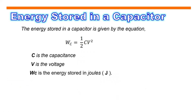Now let's discuss energy stored in a capacitor. The energy stored in a capacitor is given by the equation W equals one-half C multiplied by V squared, where C is the capacitance expressed in Farads, V is the voltage, and W is the energy stored expressed in joules.